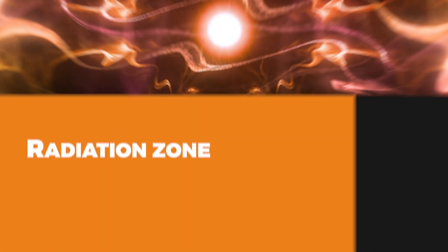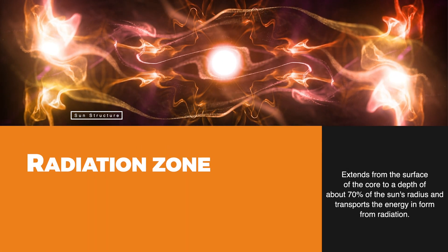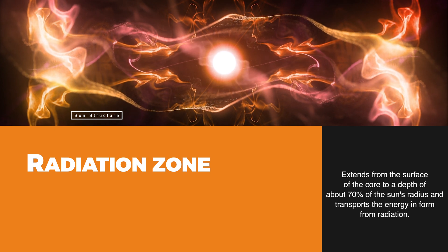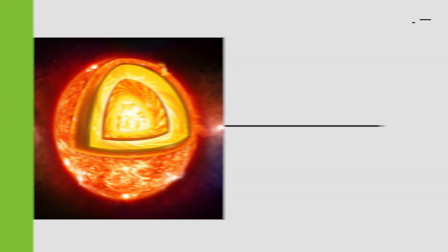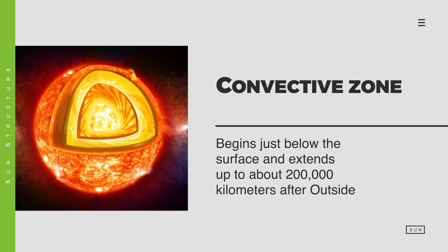The radiative zone extends from the surface of the core to a depth of about 70% of the solar radius and transports energy in the form of radiation. The convective zone begins just beneath the surface and extends to about 200,000 kilometers outward. Energy is transported through convection in the form of gas currents.